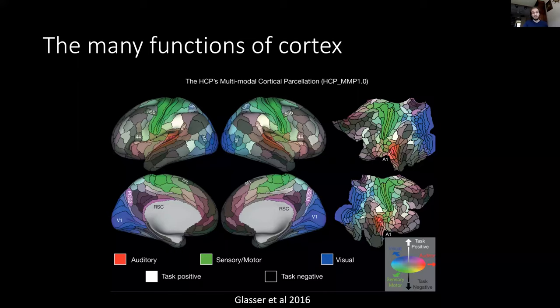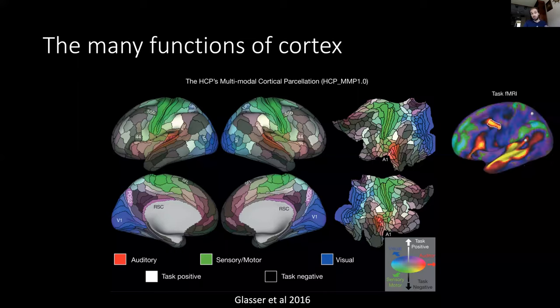For each of these regions, they were able to identify how much they were part of visual networks, auditory networks, and sensory-motor networks. The underlying MRI data also contained task fMRI data, so they had tasks like language tasks which could be used to identify which regions are involved in language comprehension.